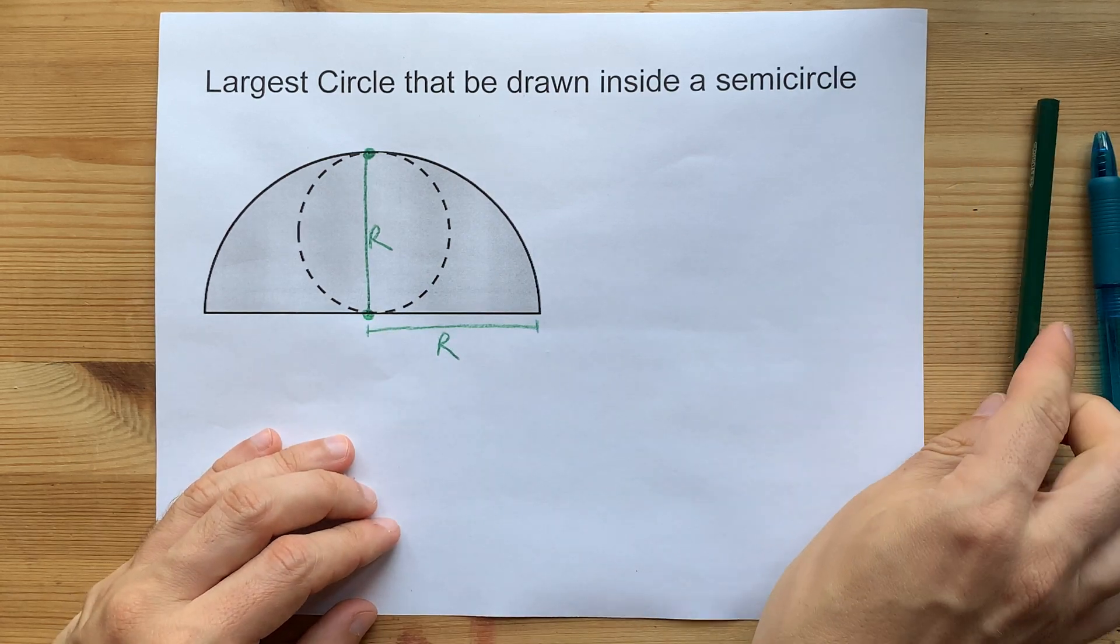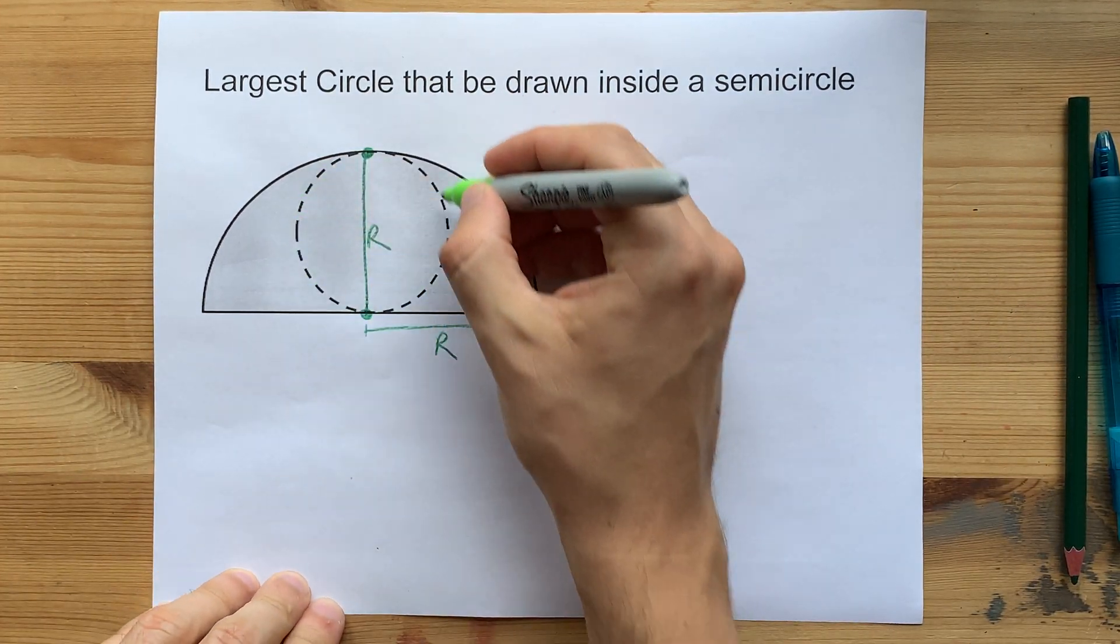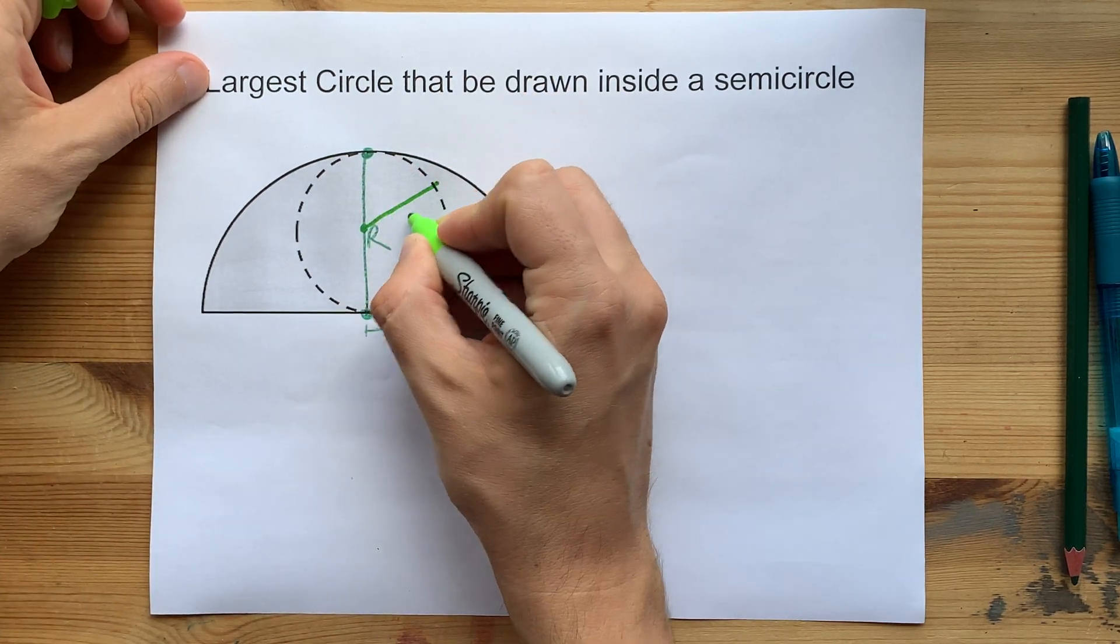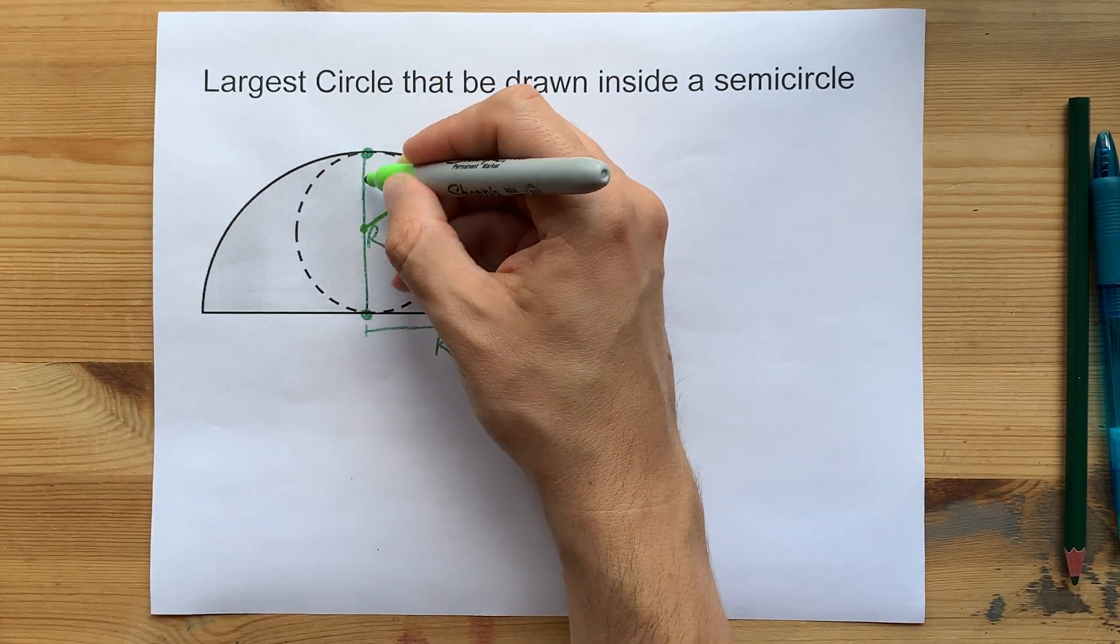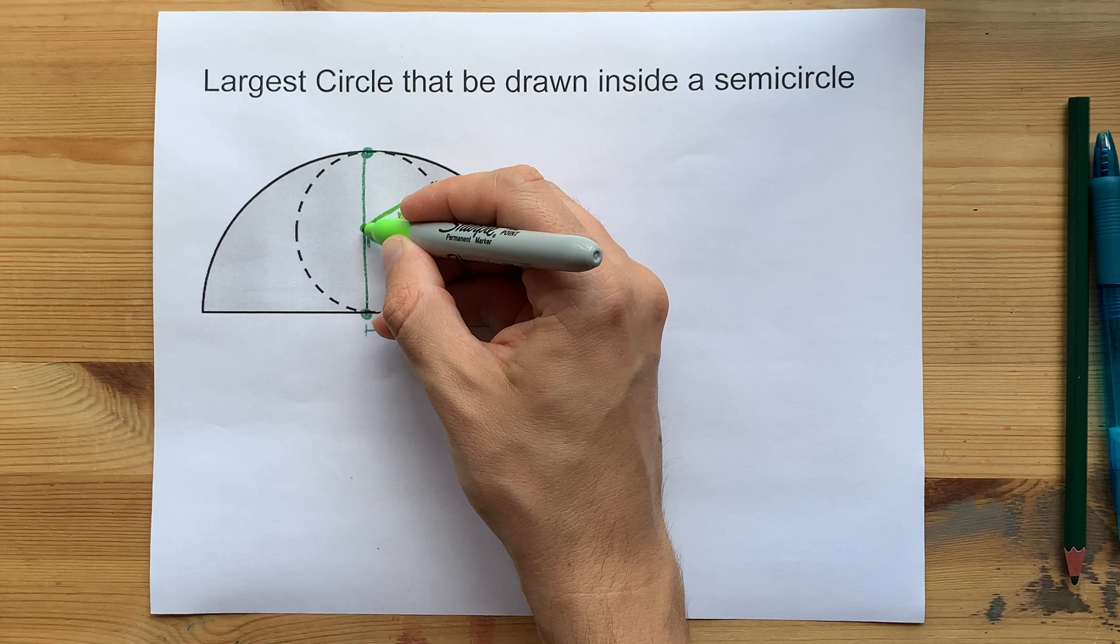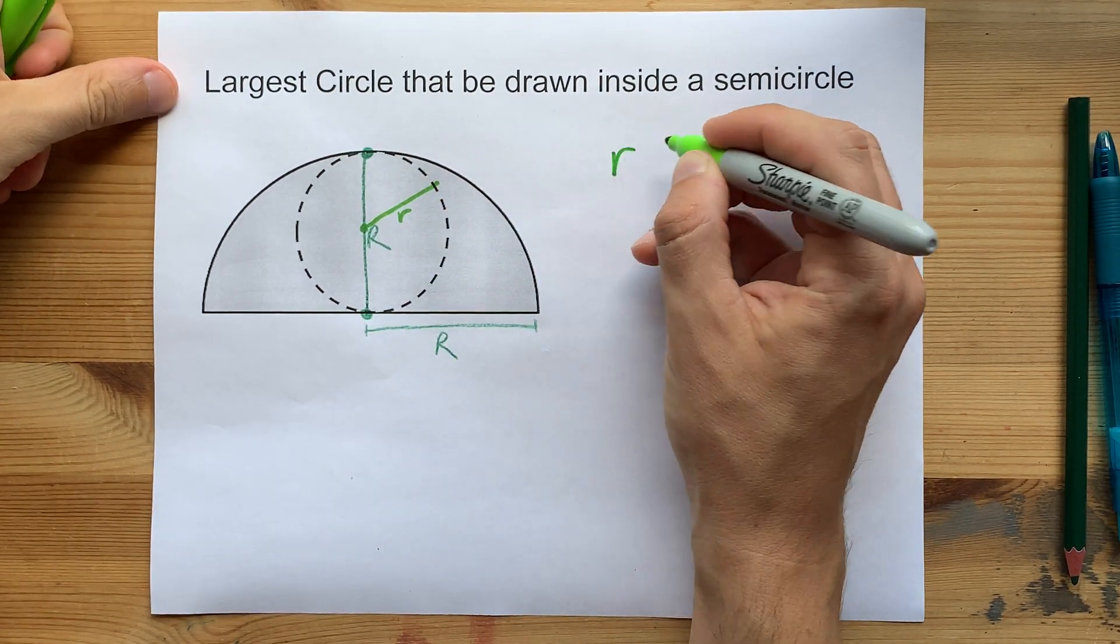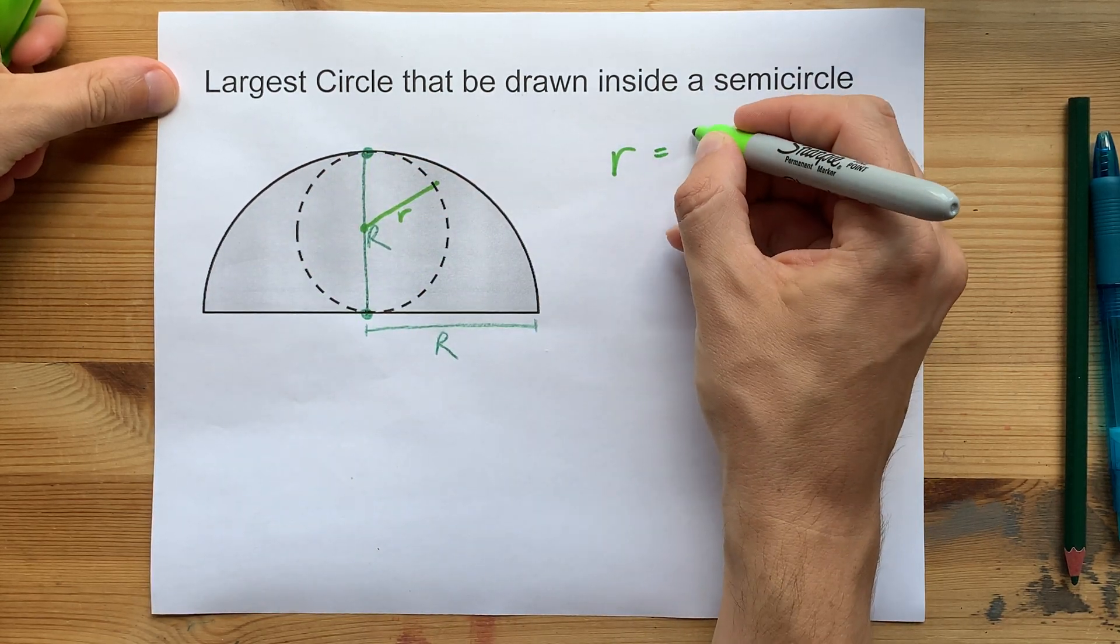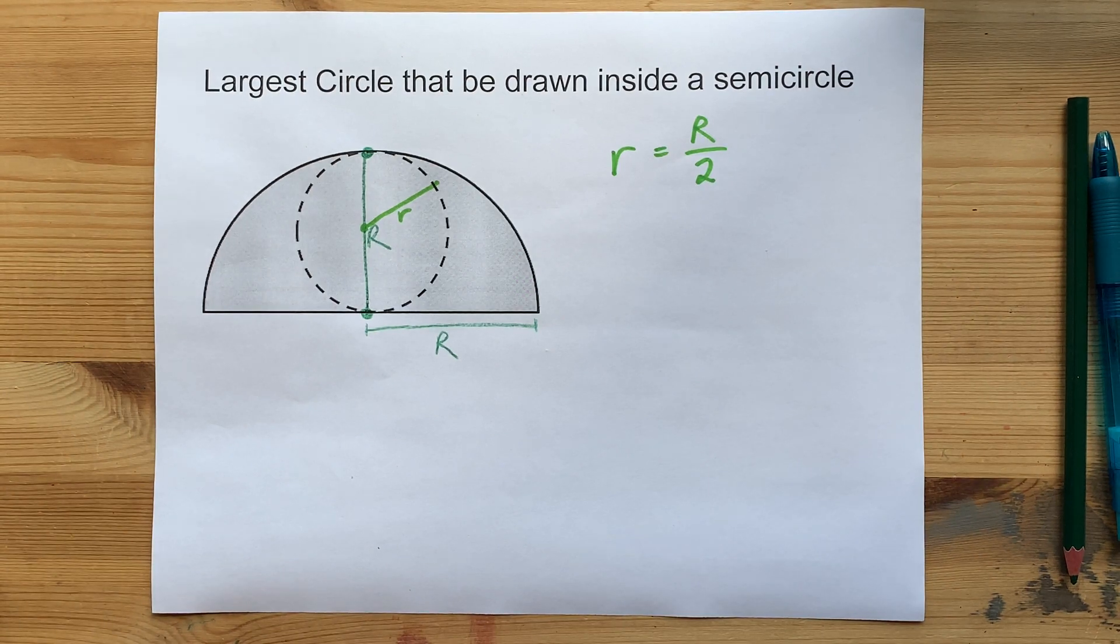Now that should show you already that the circle you're going to inscribe has a radius of little r. You have one radius to get from the center of that circle to the top and one radius to get from the center to the bottom. So the radius of the inscribed circle is half of the radius of the semicircle. That's it.